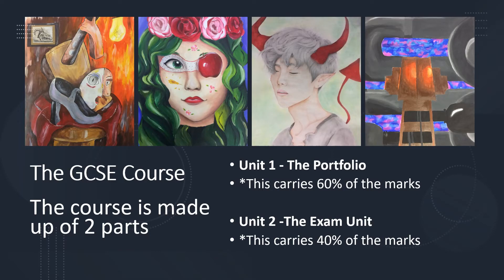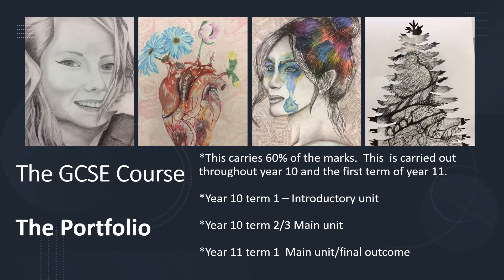The GCSE course is made up of two sections. Unit 1, the portfolio, which carries 60% of the final marks, and Unit 2, the exam, which carries 40% of the marks. The portfolio is carried out throughout the entire of Year 10 and the first term of Year 11.